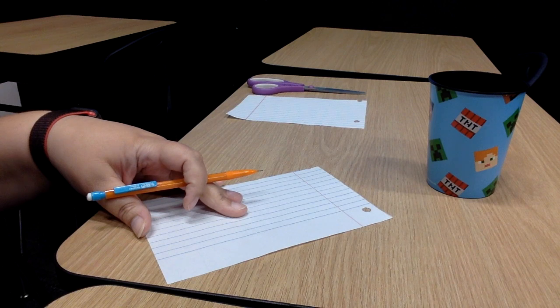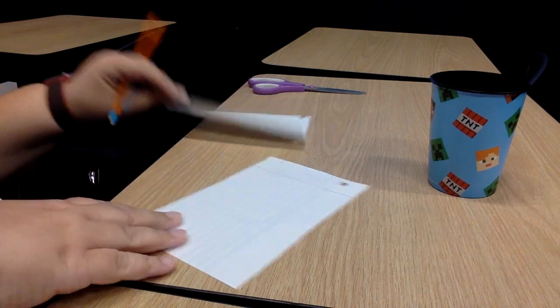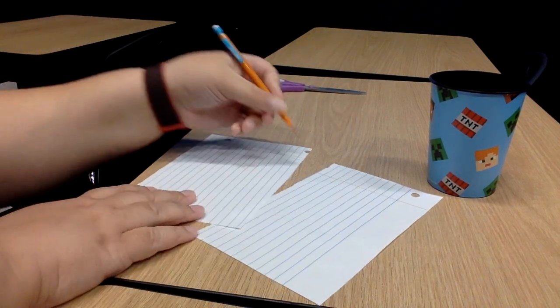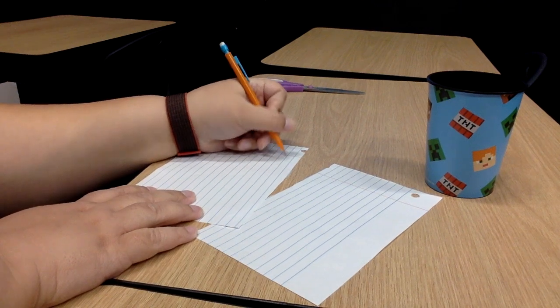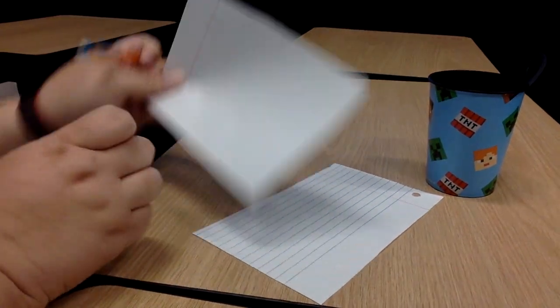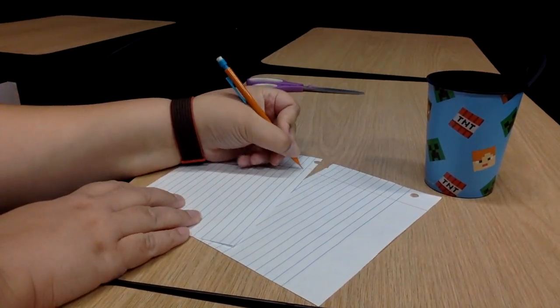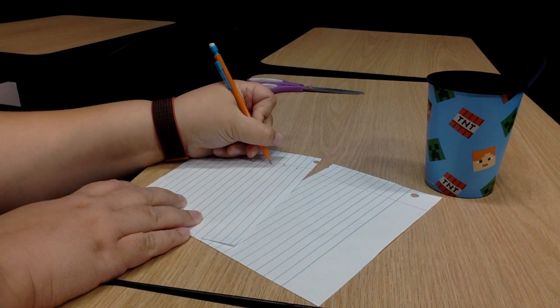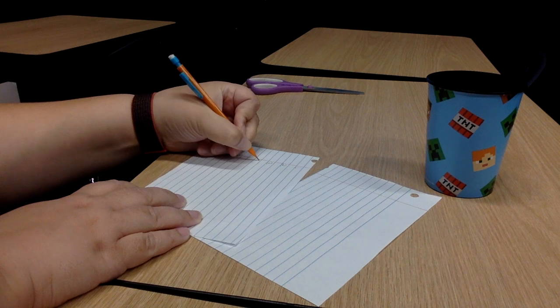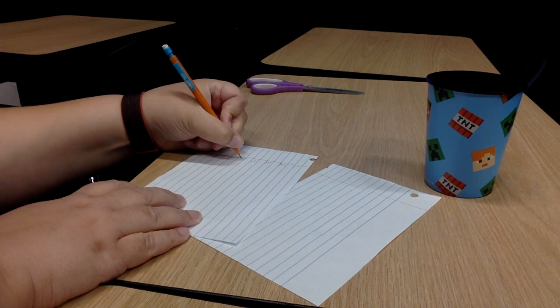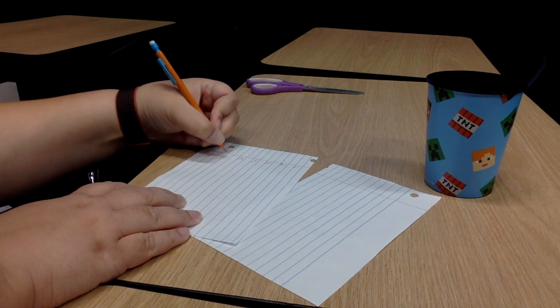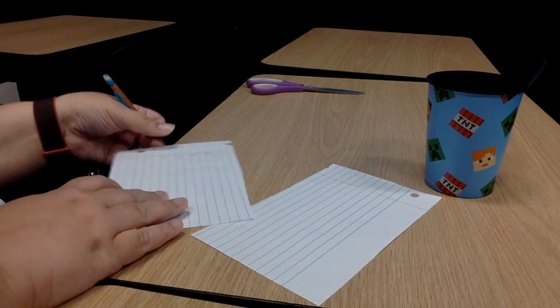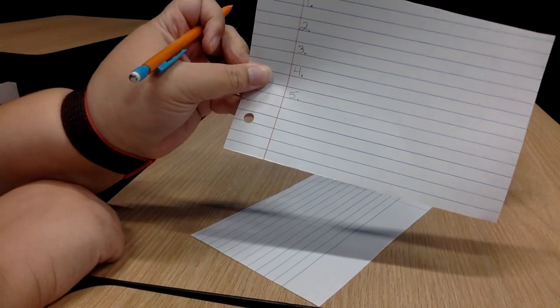The first thing I'm going to do with my papers that are cut, I'm going to go ahead and write numbers on this one, and I'm gonna leave a space in between each number. One space, two space, three space, four space, five.